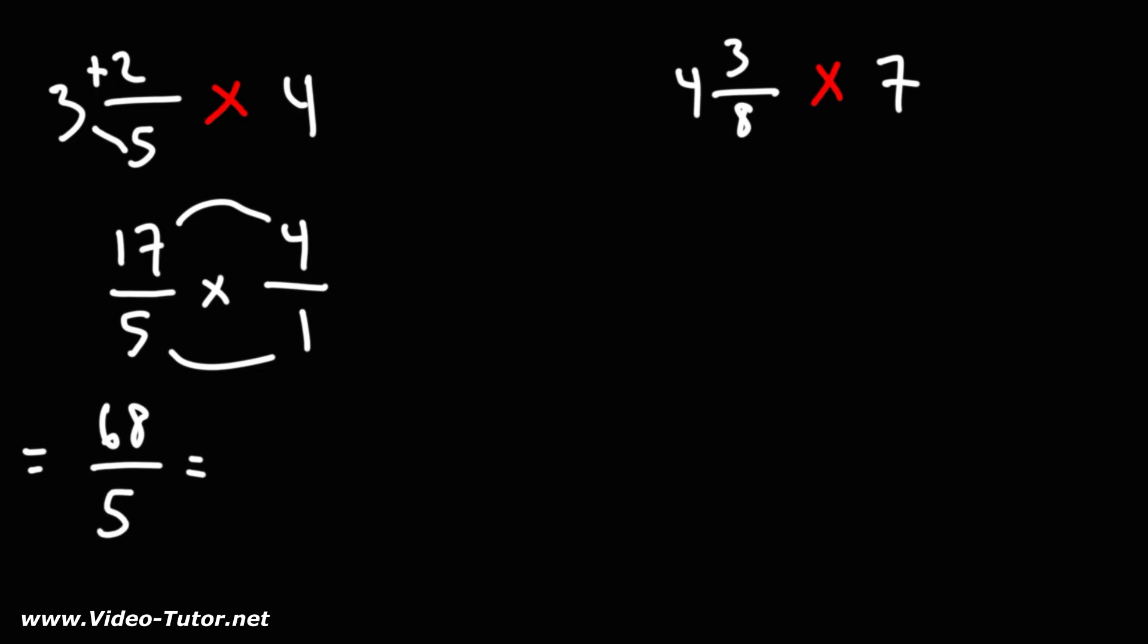So now we have the improper fraction, 68 over 5. To simplify that, or to convert that back to a mixed number, you could use long division, or you could do it this way.